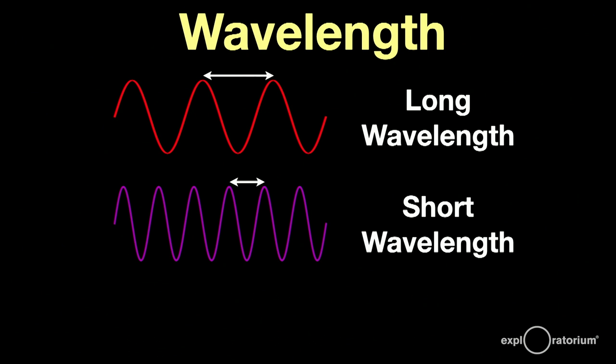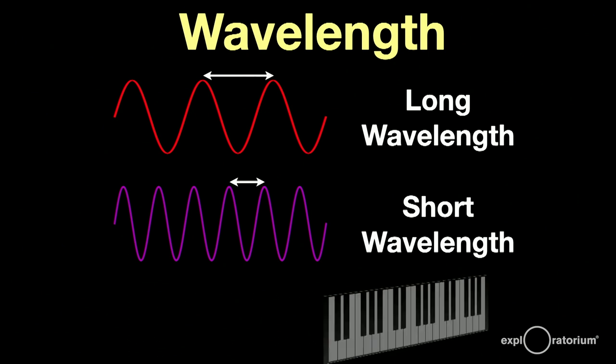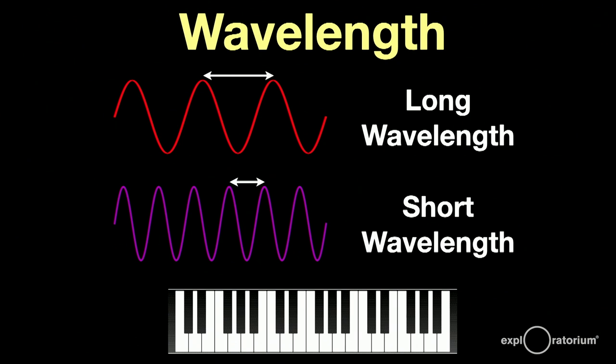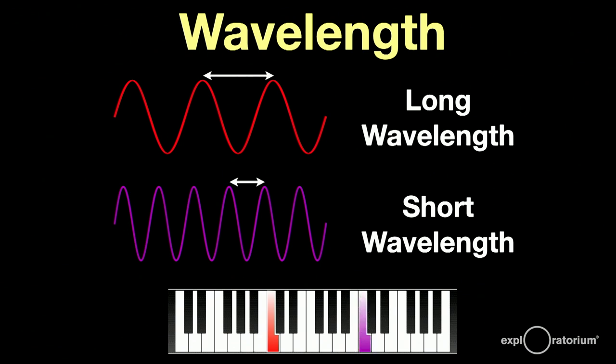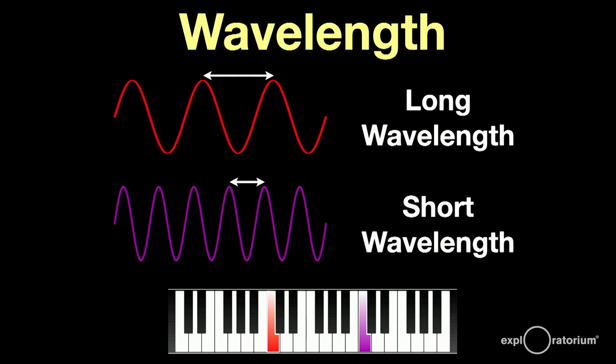If we played these two waves on a piano, the red wave might sound like this, and the violet wave would sound like this — an octave apart. As a matter of fact, red and violet light wavelengths and frequencies are about an octave apart. We can see about an octave of light.